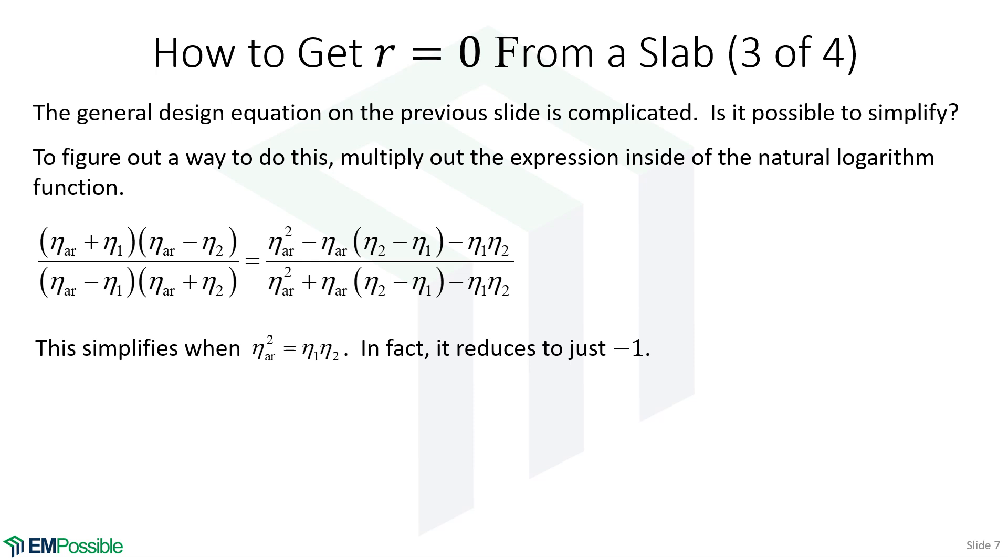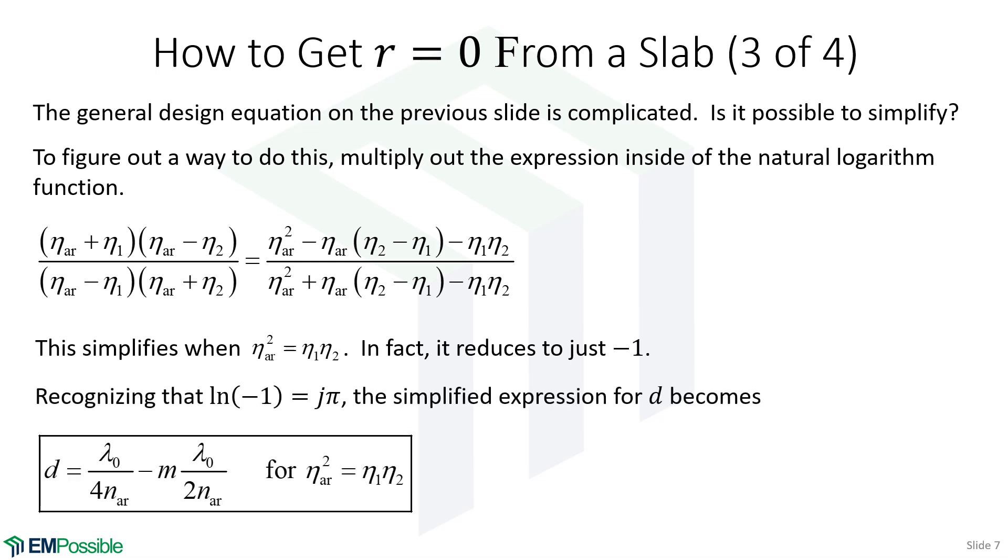Well, if we chose that, this entire expression just becomes negative 1. In which case, our design equation reduces to this. And this is what you would see if you Google anti-reflection layers. So you'll set the impedance to be essentially the geometric mean of the two impedances that you want to match. And then you make the layer a quarter wavelength, plus or minus integer multiples of a half wavelength from there.